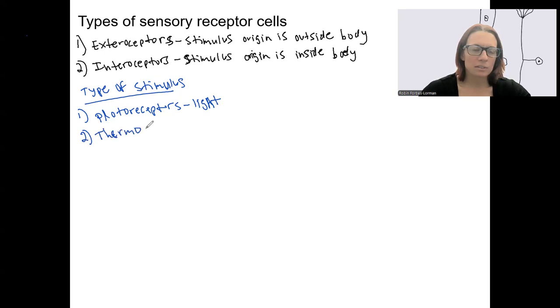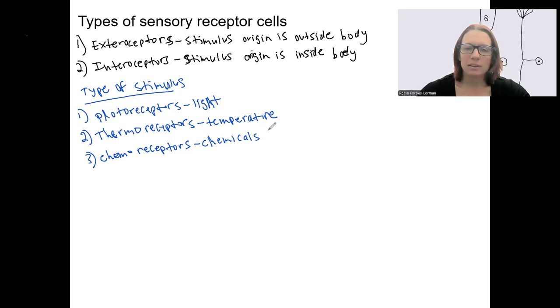Thermoreceptors detect temperature, and this could be outside or inside of the body. Chemoreceptors detect chemicals, and specifically there's lots of different types. Could be pH in the body, could be taste molecules, could be smell, odorants.